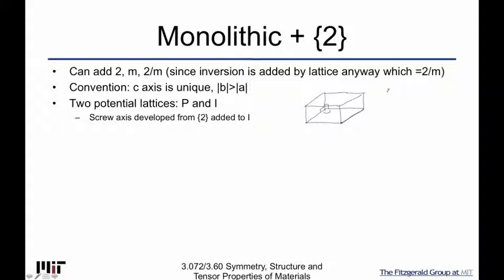We mentioned in our table of lattices that the Laue group is 2/M, and we get that automatically from having translations that work with adding a two-fold axis. Remember, the base that we start off with when we add a two-fold axis at the lattice points is the P2.